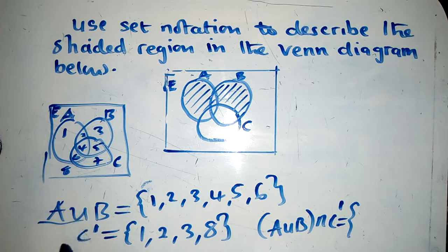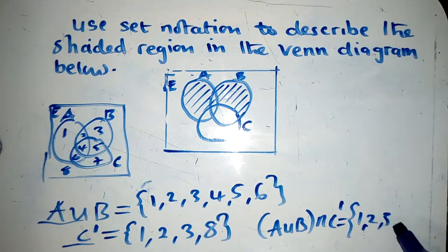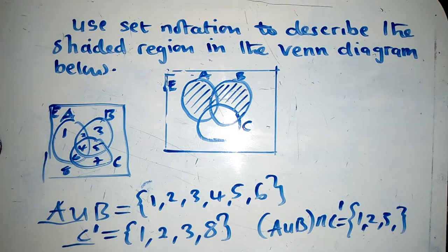The intersection. This and this will be 1, 2, yes, 3, yes. So these are the only region.